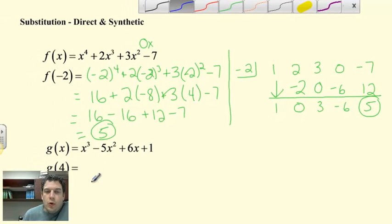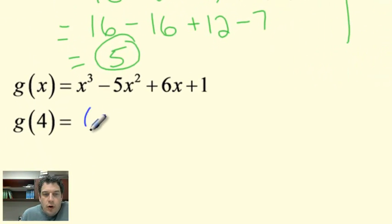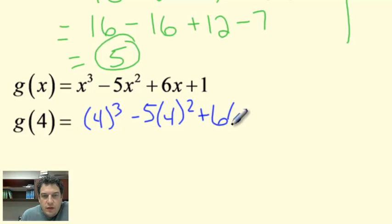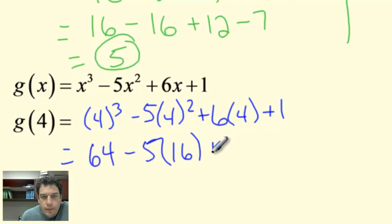So let's do one more here. We're going to plug in 4. We're going to say 4 to the third minus 5 times 4 squared plus 6 times 4 plus 1. The first thing we're going to do is exponents. 4 to the third is 64 minus 5 times 4 squared, which is 16, plus 6 times 4 plus 1.